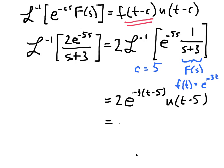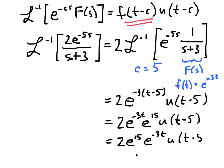The e to the minus 3 times t minus 5 is the same as 2, e to the minus 3t, e to the 15 times u of t minus 5. And e to the 15 is just a constant, so we could pull that out. That's 2, e to the 15, and then we have e to the minus 3t times u of t minus 5. And so that's our inverse transform in this case.